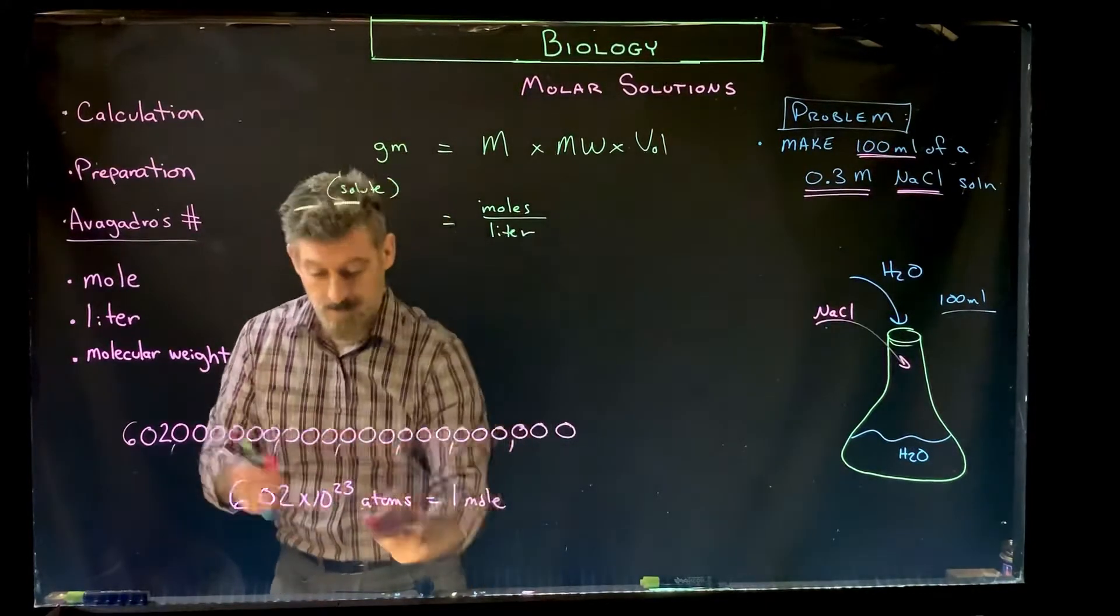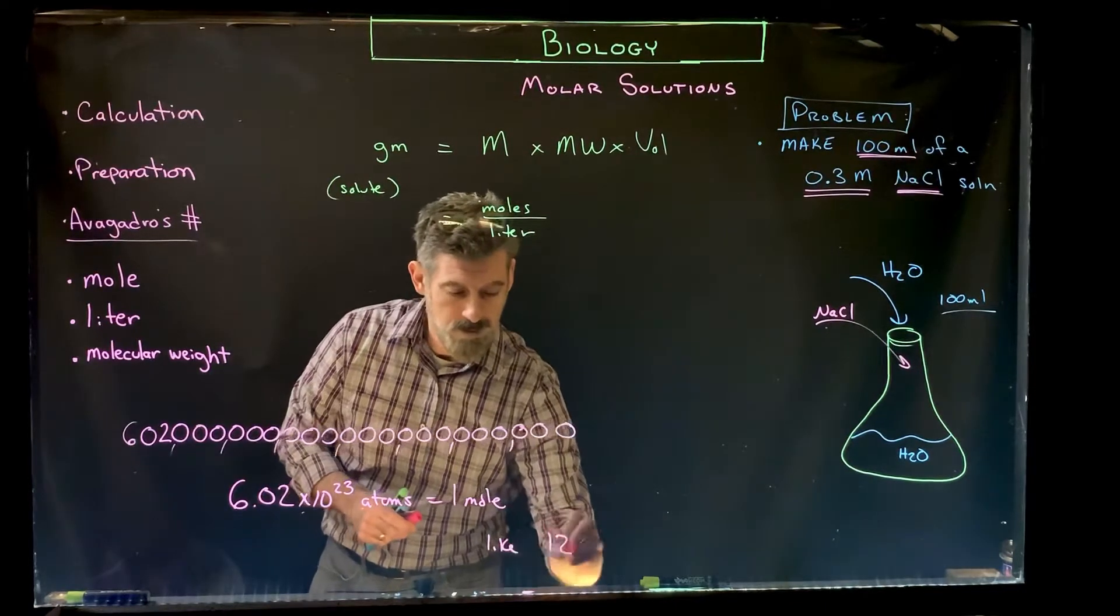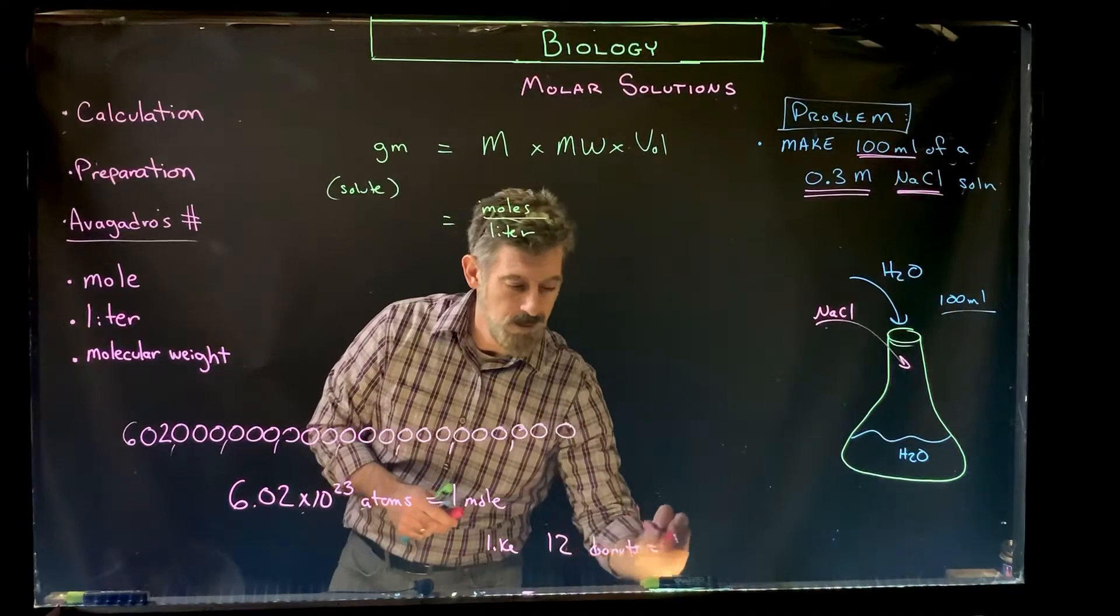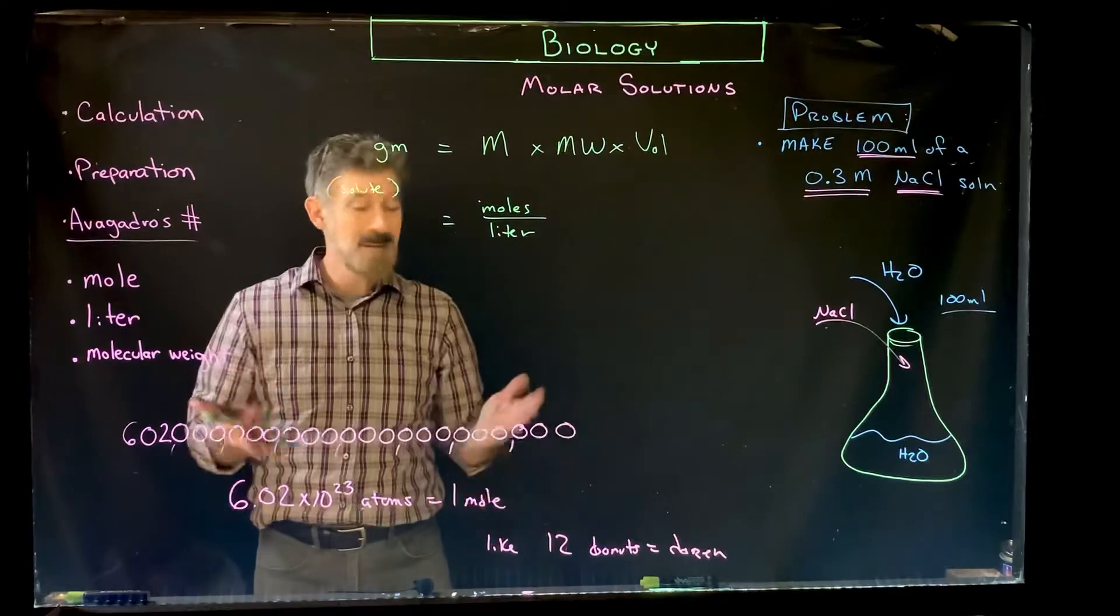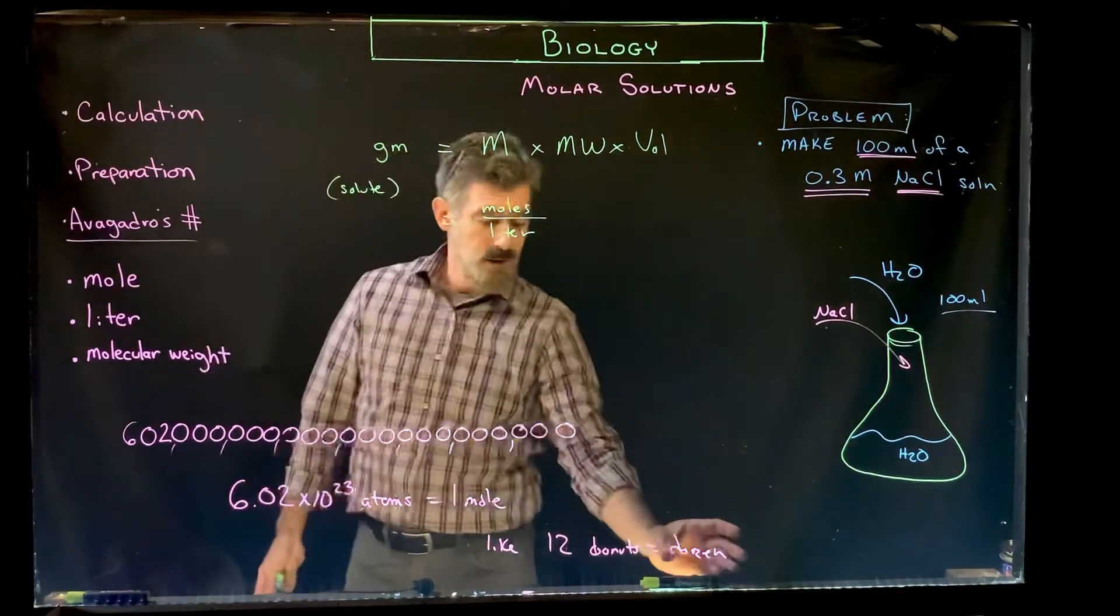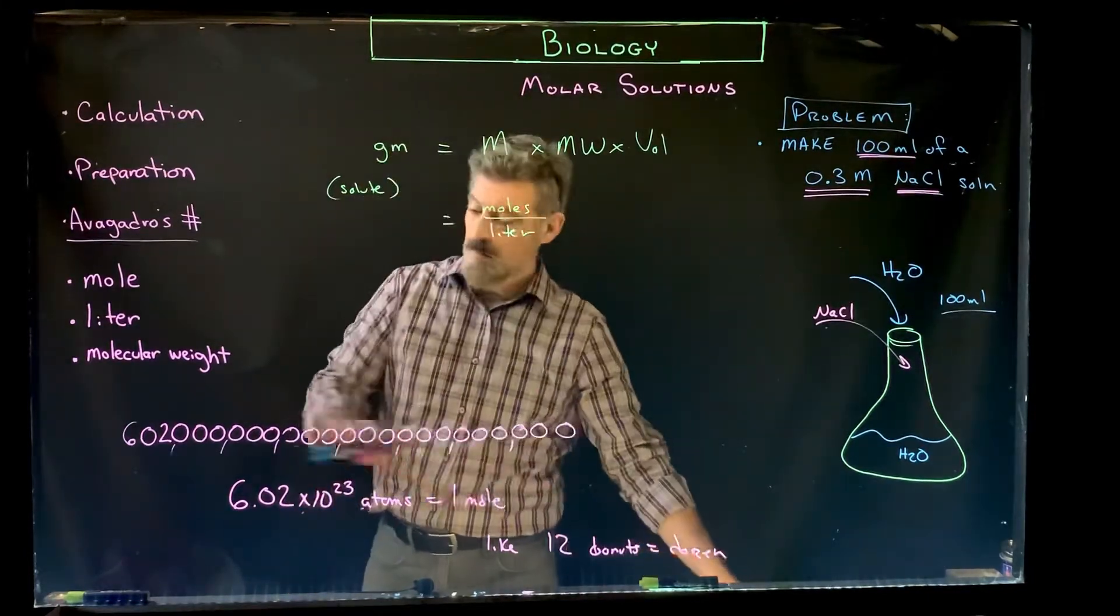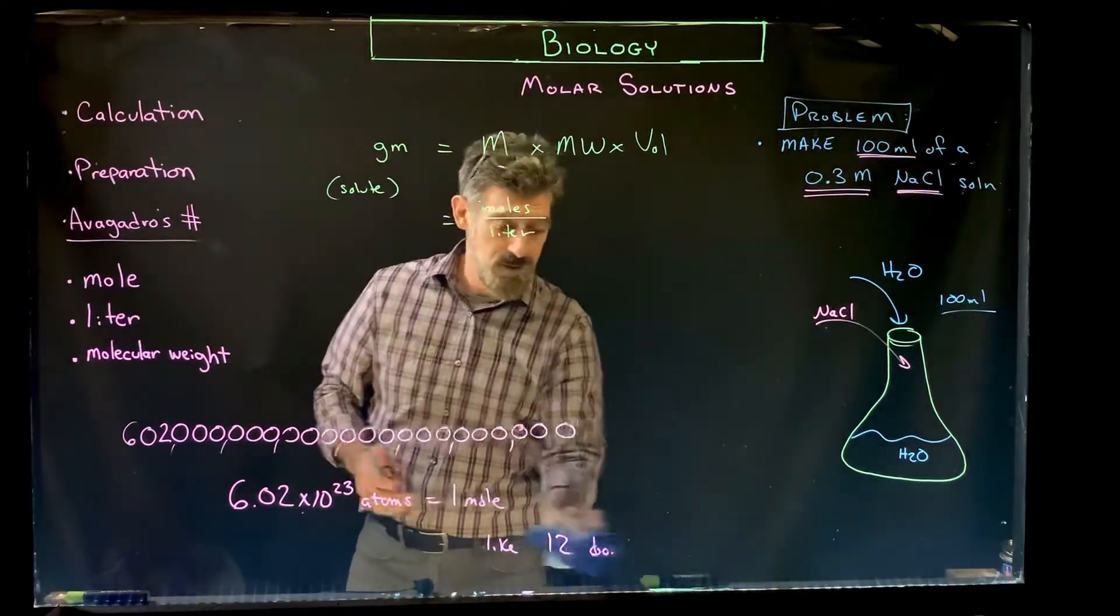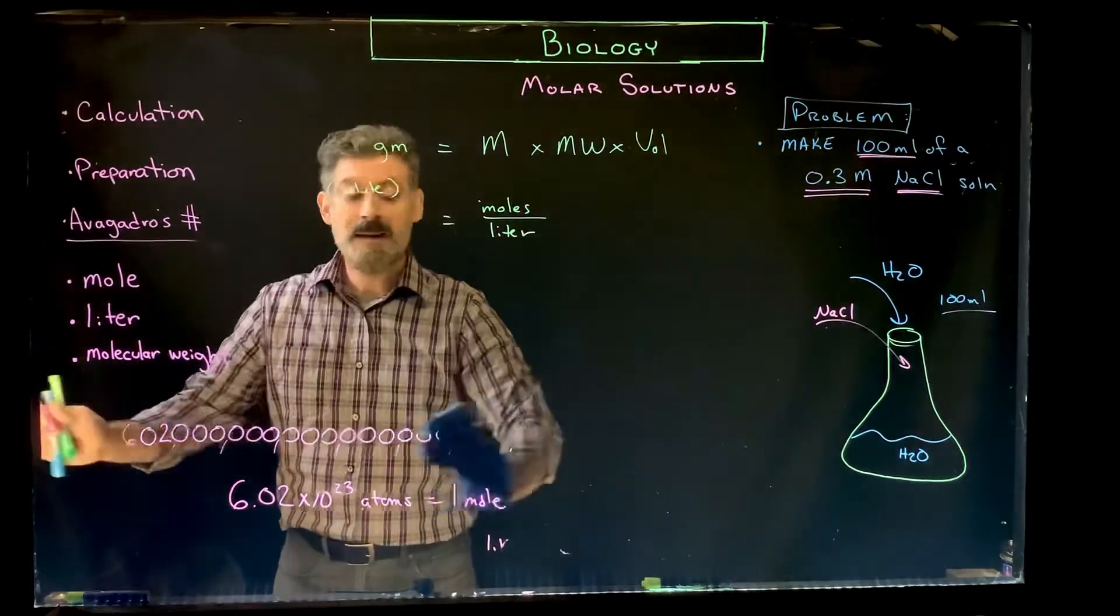Just like 12 donuts equal a dozen. The same concept. A mole represents 6.02 times 10 to the 23rd of something that are very, very small things, atoms. So we're not using this number in the calculation. You don't even really have to worry about it here.